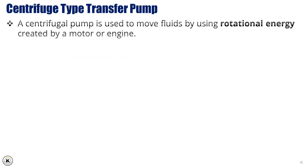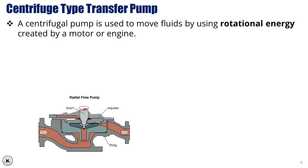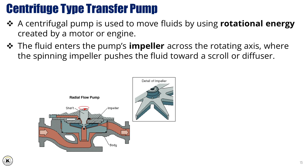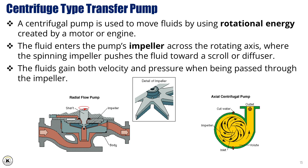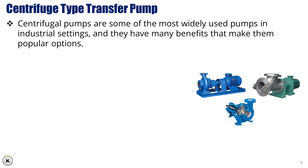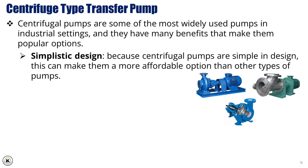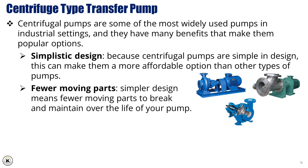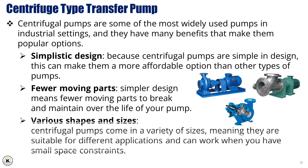Centrifuge type transfer pump. A centrifugal pump is used to move fluids by using rotational energy created by a motor or engine. The fluid enters the pump's impeller across the rotating axis, where the spinning impeller pushes the fluid toward a scroll or diffuser. The fluid gains both velocity and pressure when passed through the impeller. Centrifugal pumps are some of the most widely used pumps in industrial settings, offering several benefits: simplistic design makes them a more affordable option; fewer moving parts means less maintenance; and they come in various shapes and sizes, making them suitable for different applications, even in small-space constraints.